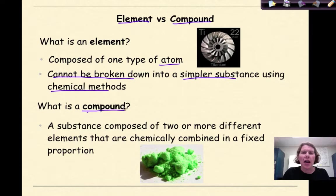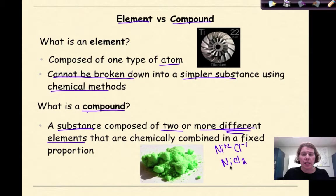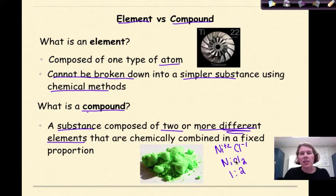A compound is defined as a pure substance composed of two or more different elements that are chemically combined in a fixed proportion. Here we have nickel two chloride. If I look at nickel two chloride, there's nickel — Ni — with a Roman numeral two, so Ni plus two, and the chloride ion is Cl minus one. If I cross those down, this is NiCl2. Nickel is a metal, chlorine is a non-metal, and there's a one to two ratio based on the subscripts. There are different elements coming together, so that is our definition of a compound.